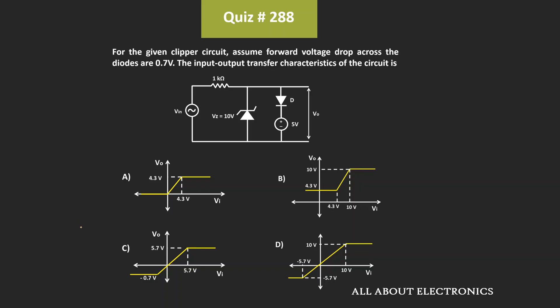Hey friends, welcome to the YouTube channel all about electronics. In this question, we have been given a clipper circuit and we have been asked to find the input-output transfer characteristic of the given circuit. We have been given that the forward voltage drop of these two diodes is 0.7V.